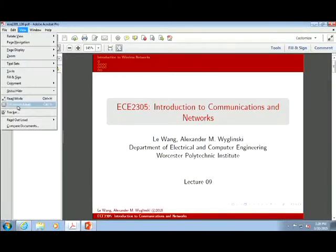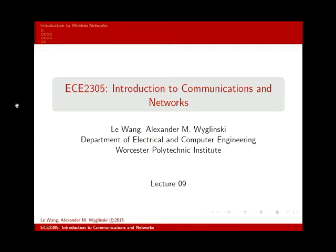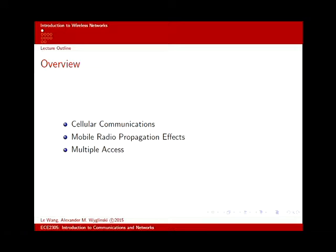This is Lecture 9 of ECE 2305. In this lecture, we're going to be looking at one of the key technologies at the center of our information age: cellular communications and cellular networks. We're not going to talk about 1G, 2G, 3G, 4G buzzword stuff. We're going to look at the core physics — how cellular communications works, why it's powerful, radio propagation effects, and how we accommodate all of us and our cell phones — multiple access.